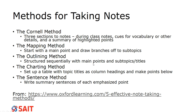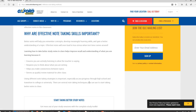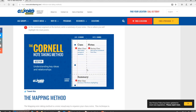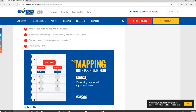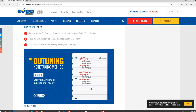The outlining method is for sequential thinkers who like main points, subtopics, and titles going down the line. A lot of people go to the outlining method in classes with a lot of theory. The charting method uses a table with topic titles as column headings and points below. The sentence method is where you just write sentences for each point. A webpage is where you'll find all that information and examples.